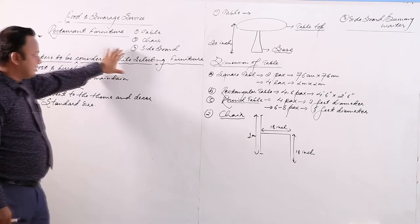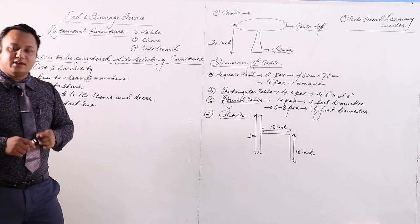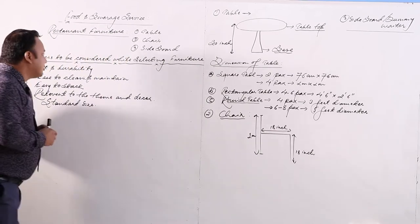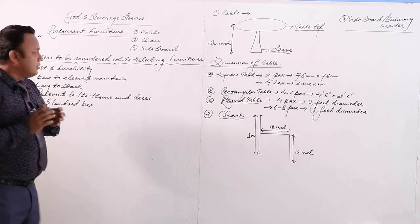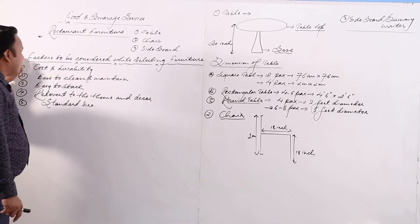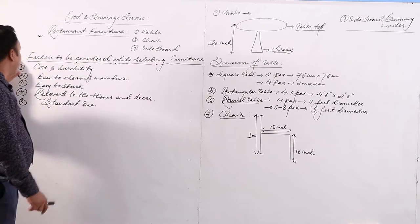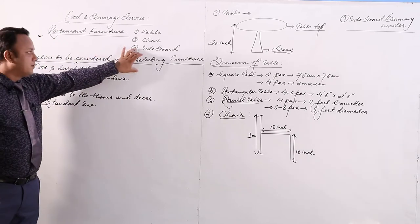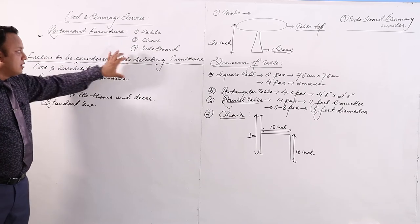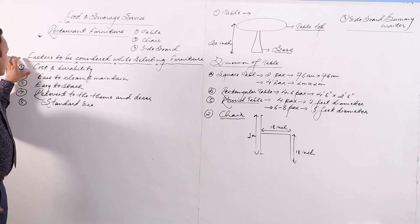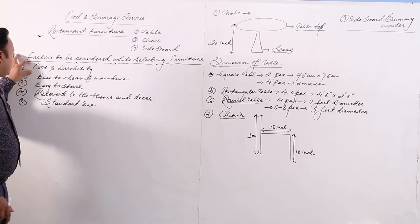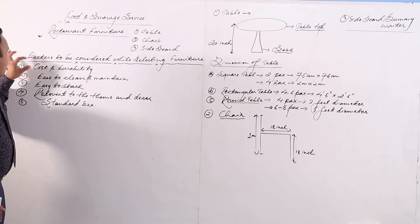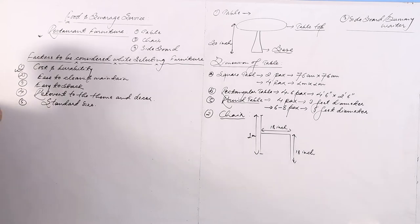Now let us look at the factors to be considered while selecting Restaurant Furniture. If we are planning to open a restaurant, we need to buy furniture, and before selecting it, we need to consider some basic things. One of the most important factors is Cost and Durability. Furniture involves a large amount of money, so we need to consider how much it costs and how durable it is. Cost and Durability are relevant to each other and should always be considered together.